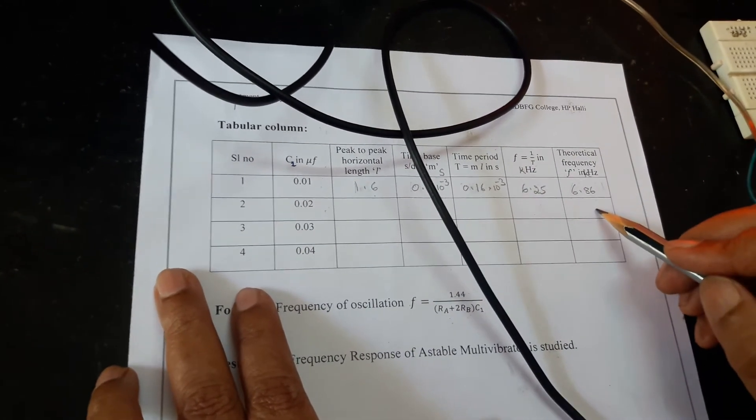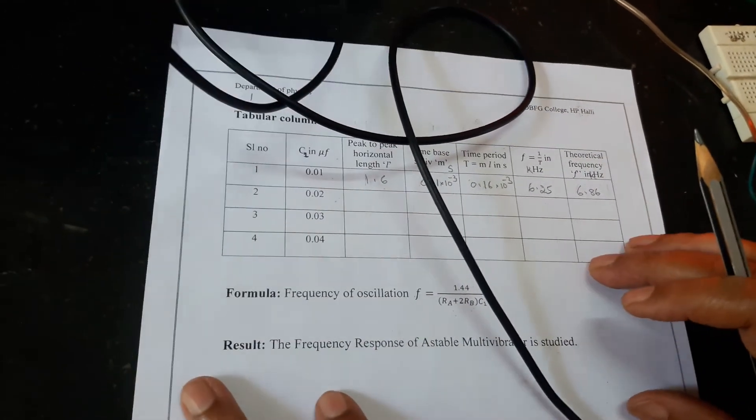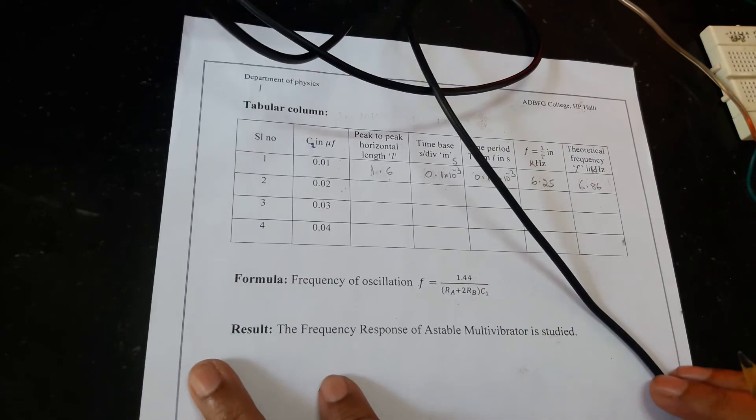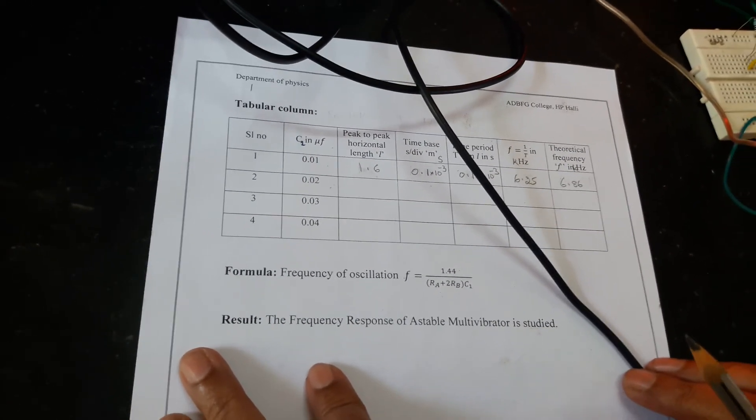Repeat the experiment for different sets of capacitors 0.02, 0.03, 0.04 and tabulate the readings. Every time you keep comparing the experimental value of frequency with the theoretical value of the frequency. Then write down the result that is frequency response of the astable multivibrator is studied. Thank you.